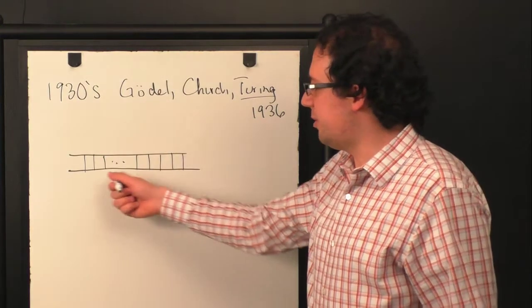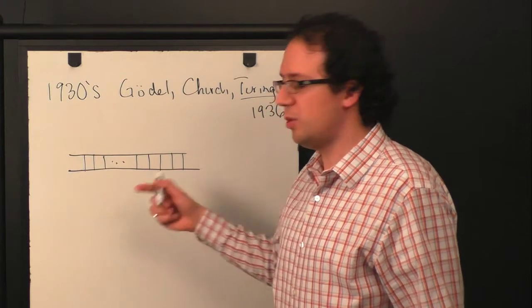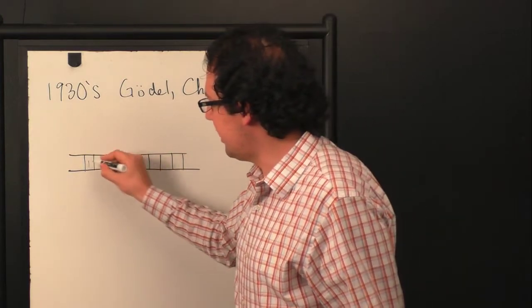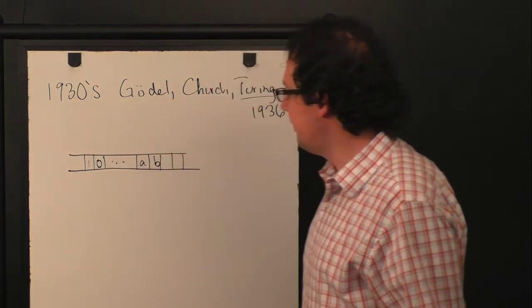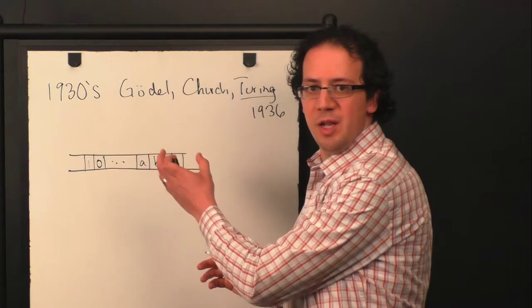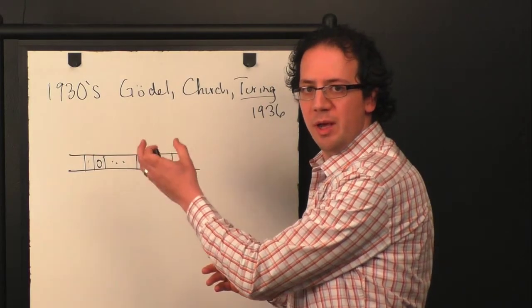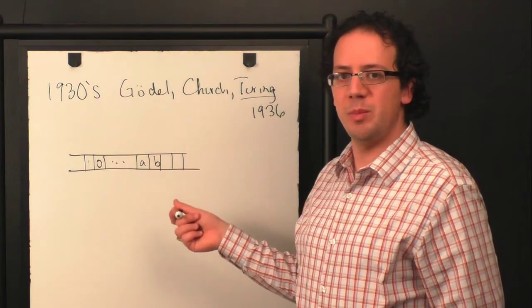So you have a one-dimensional tape that's divided up into squares or cells. And in each cell, you can put a symbol. Maybe it's a digit like one or zero or a letter like A or B. But the key thing is that the individual cells of the tape are recognizable. You can tell where a cell begins and ends. And that there are only finitely many symbols.